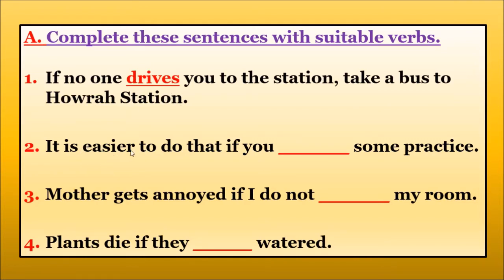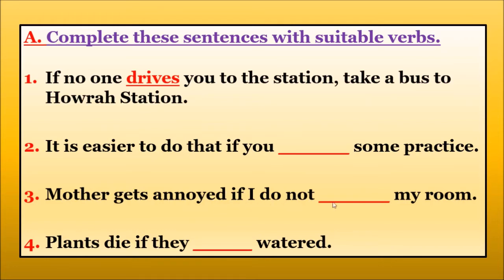'It is easier to do that if you have some practice.' The answer is 'have.' Next: 'Mother gets annoyed if I do not ___ my room.' When does mother get angry? When we keep the room dirty. So to avoid mother's anger we have to clean the room. The answer is 'clean' — mother gets annoyed if I do not clean my room.